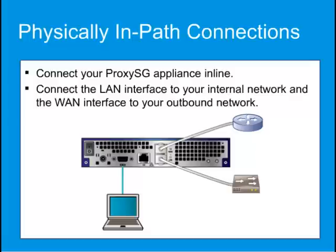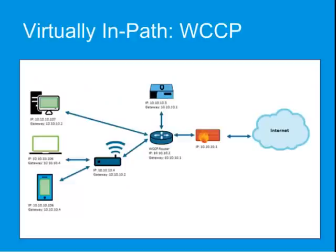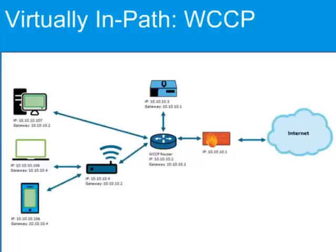Next, let's look at a virtually in-path deployment. A virtually in-path deployment uses Web Cache Control Protocol, or WCCP, which relies on Cisco and Cisco-compatible routers, firewalls, or switches to redirect intercepted traffic to the ProxySG. WCCP provides options for balancing load among several ProxySG appliances and is fault tolerant, sending traffic to the Internet directly should the ProxySG appliance be unable to handle requests.